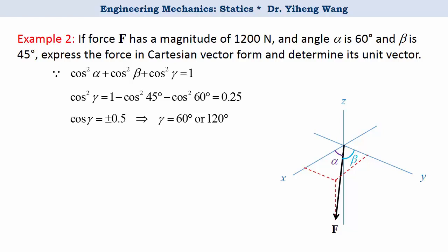Now let's look at the image. As you can see, the force falls in the octant made by the positive x, positive y, and negative part of the z-axis. And also we know that the direction angle is defined as the angle made by the force with the positive part of the axis. Therefore this angle gamma is 120 degrees.